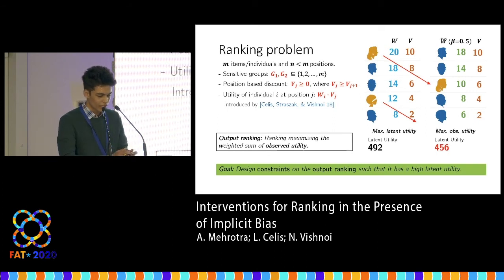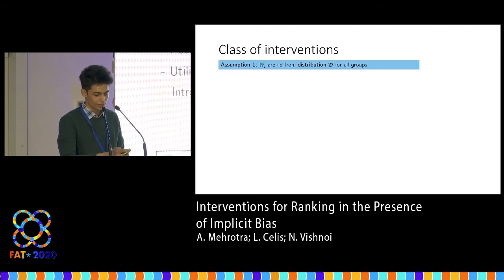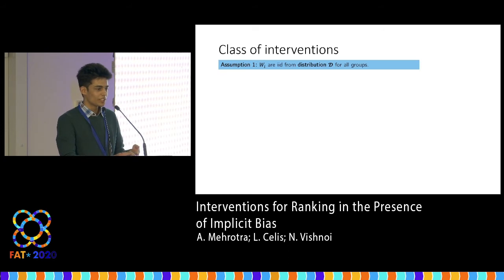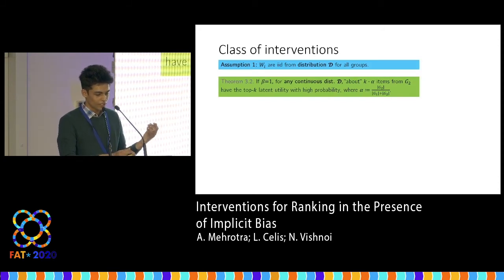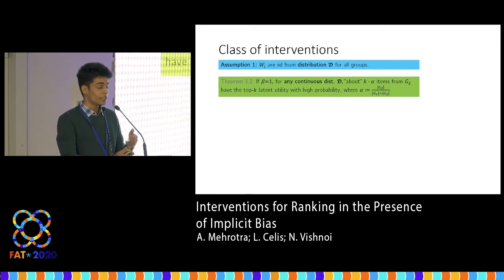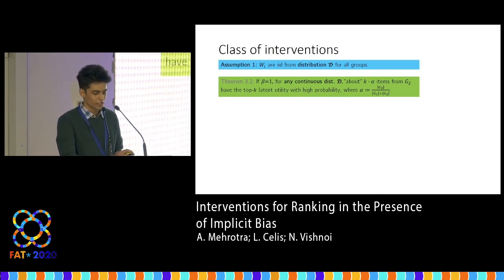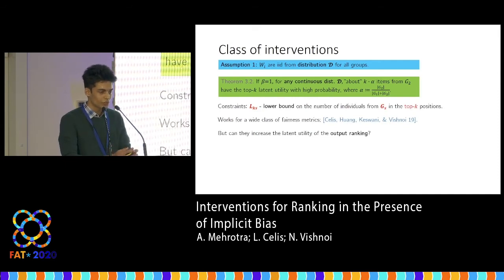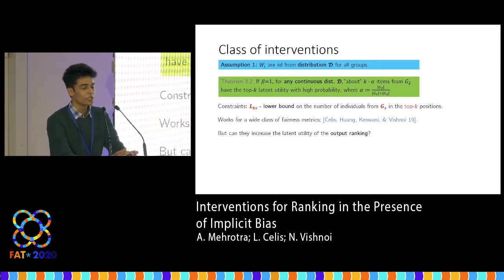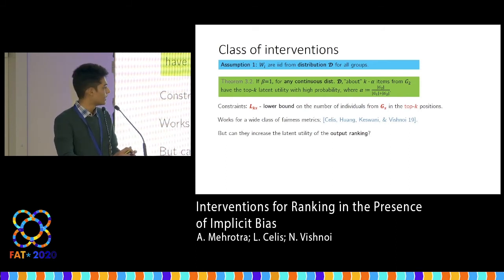Our goal is to design constraints on the output ranking so that it retains a high latent utility. The first assumption we make is that the distribution of utility of the candidates is the same irrespective of their group, which seems reasonable as we expect candidates of different groups to have similar abilities. In our first result, we show that for any distribution of utilities, in the top K positions of the optimal ranking, you expect to see a proportional number of underprivileged candidates with high probability. Whereas in the traditional ranking, we tend to choose fewer underprivileged candidates — this motivated us to use lower bound constraints, specifying the minimum number of candidates from a particular group you'd want to see in the top K positions.